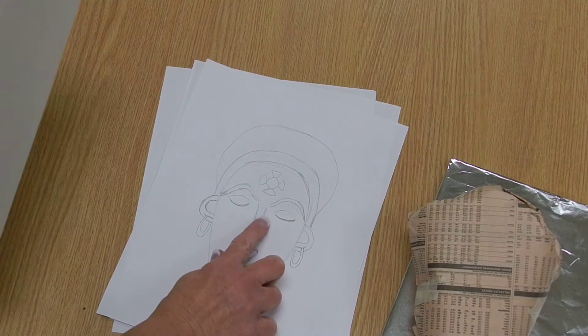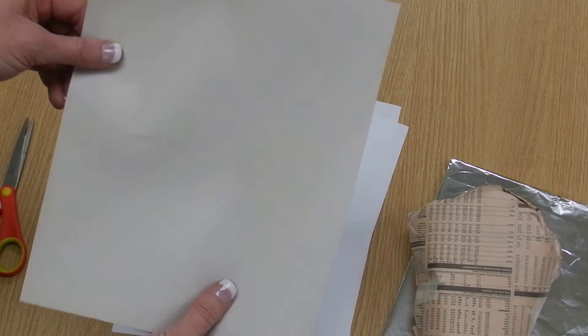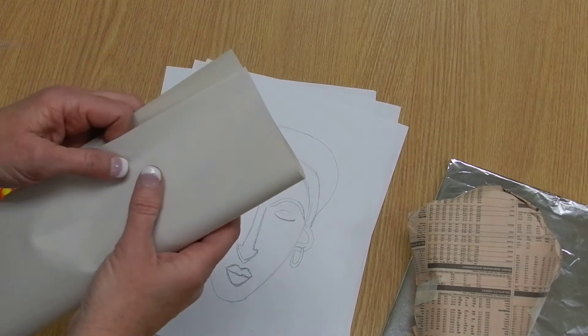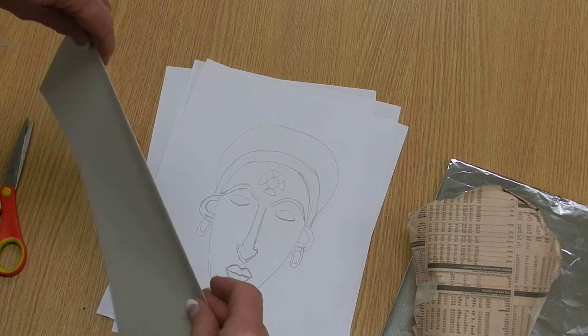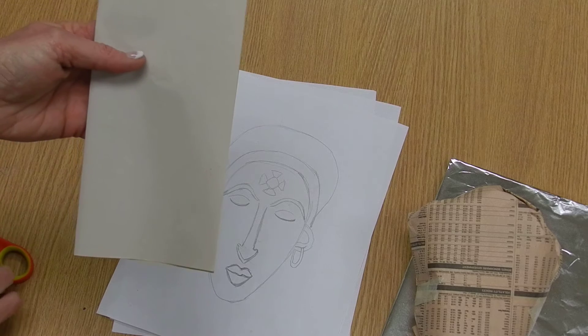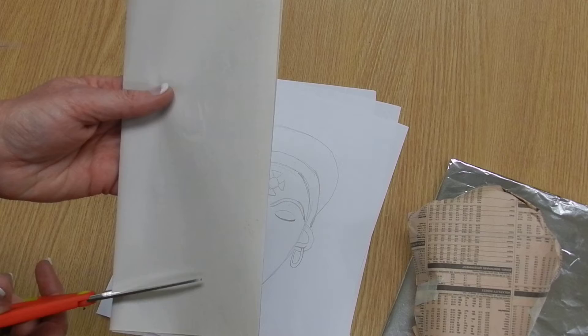So again, based on this face shape, I'm going to take my piece of 8x10 newsprint, and I'm going to fold it in half so that when I cut the shape of the face of my mask, it will be symmetrical. In other words, it will be the same on both sides.